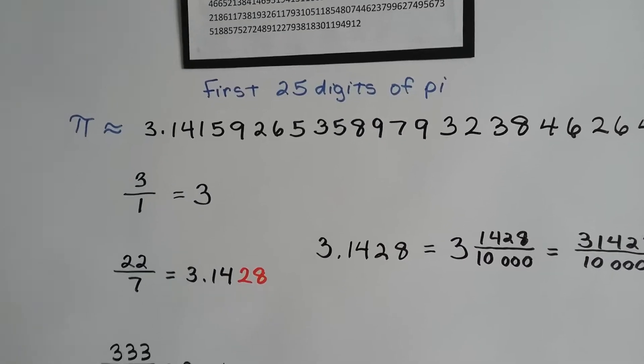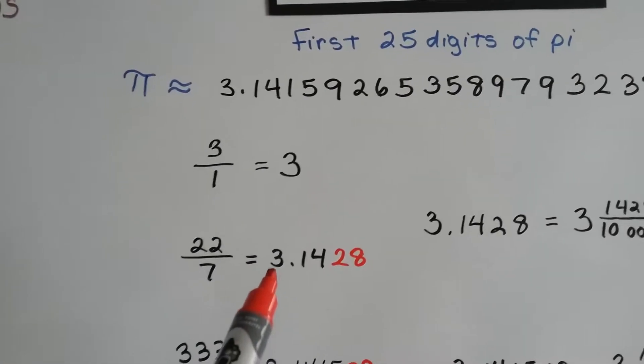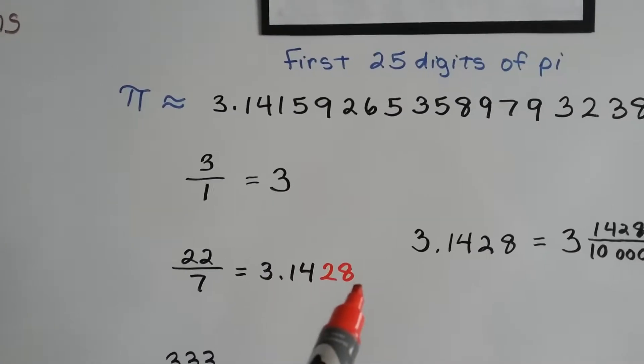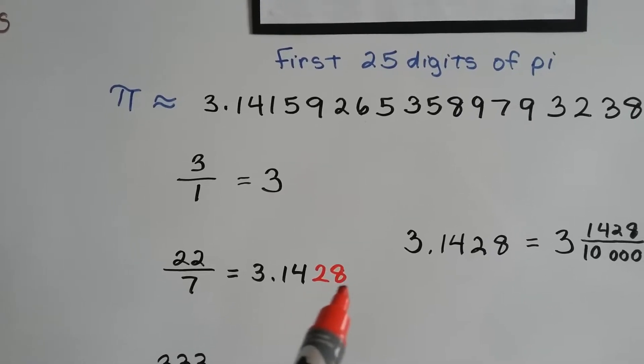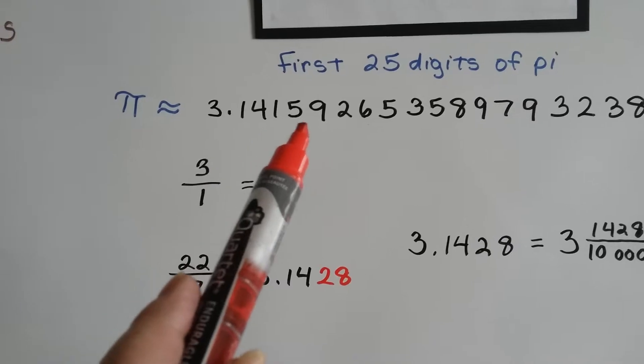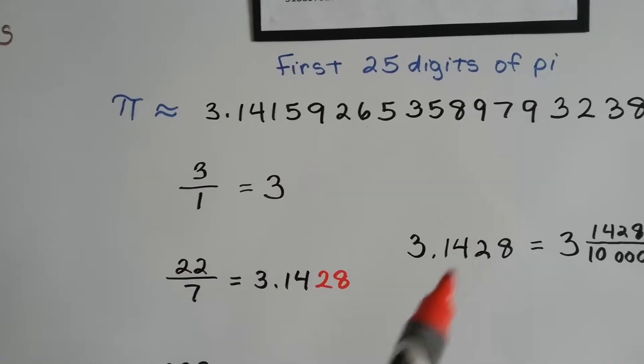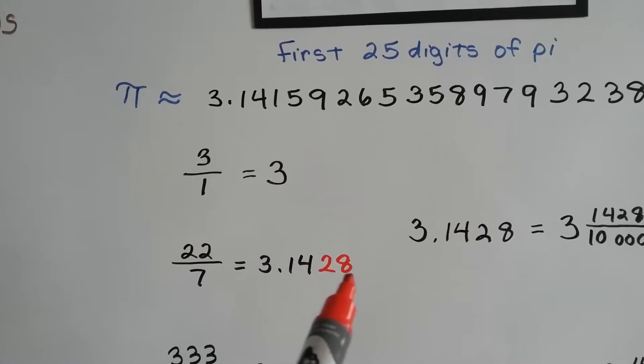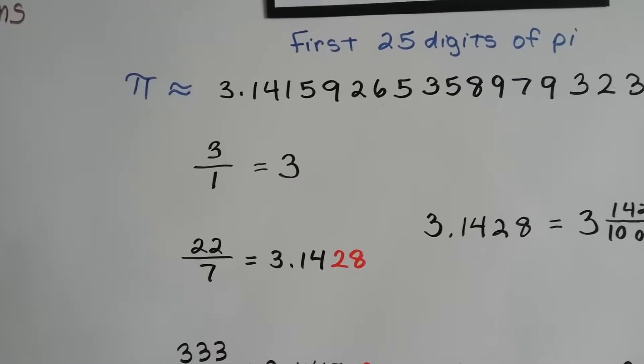Well, we can't. But, we can use 3.1428 and the 2.8 are not the real numbers of pi. It goes 3.1415 and then the rest of these numbers. But if we use 3.1428, we can make it 22 over 7.